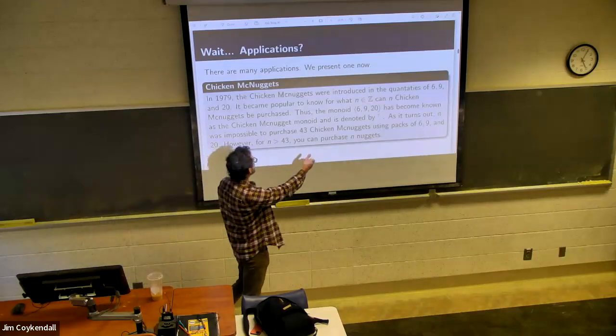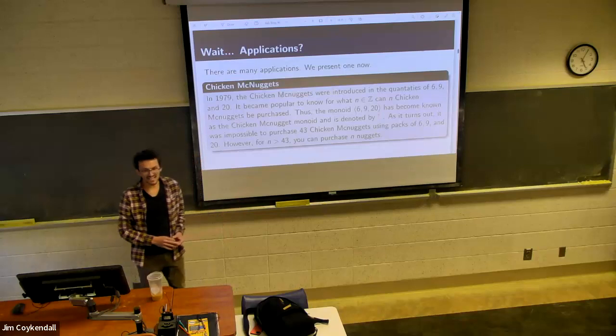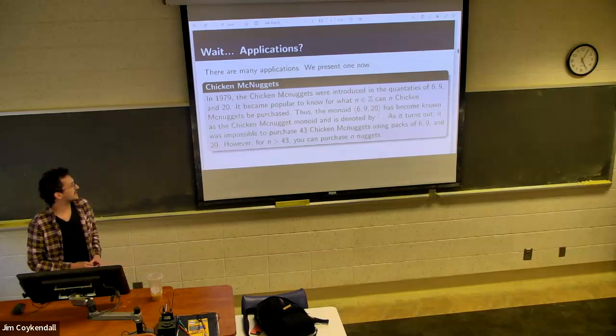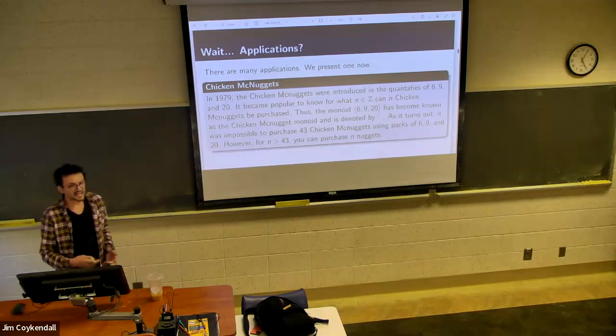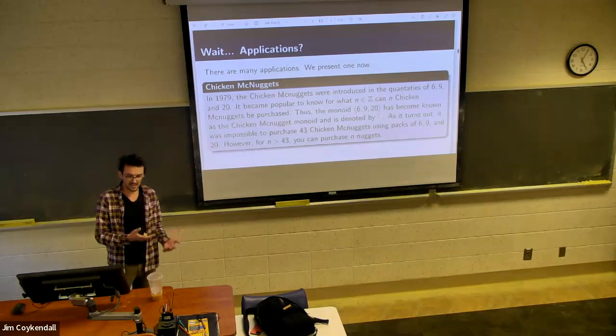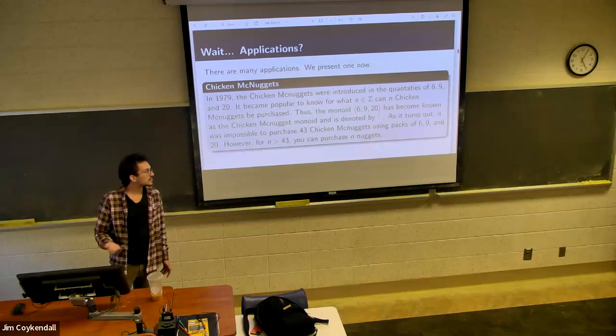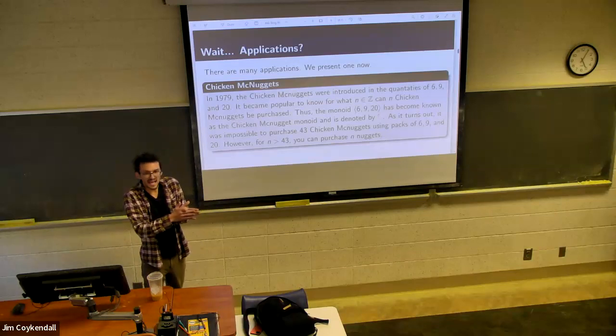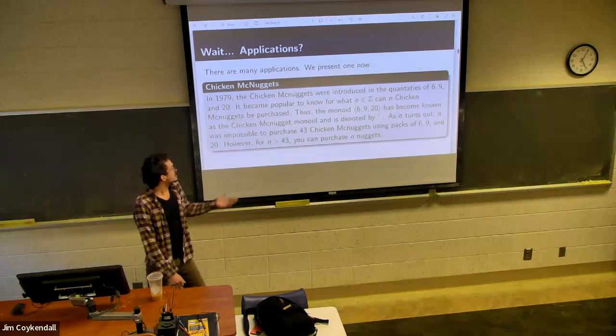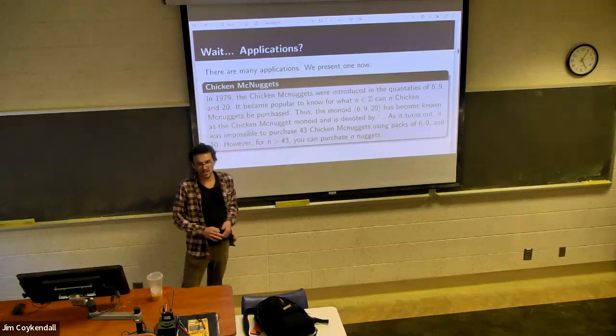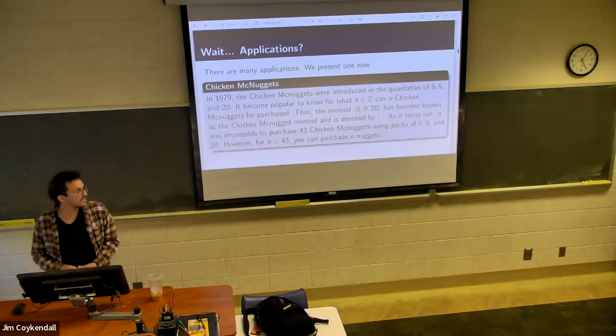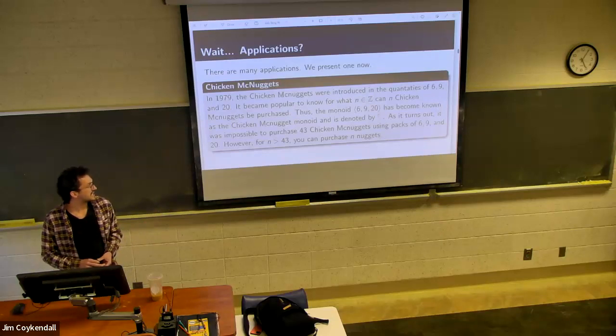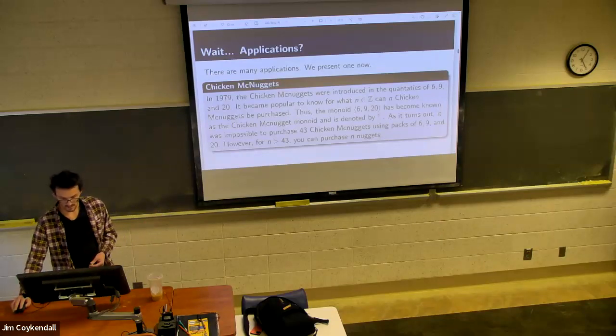So yeah, so upon further study, it turns out you cannot get 43 chicken McNuggets using combinations of 6, 9, and 20. But as you guys might think with our model, having a finite complement, there's going to be some integer where you can get everything above it, right? So here, anything above 43, you can find the combination using packs of 6, 9, and 20 to get that many nuggets. And that's important.